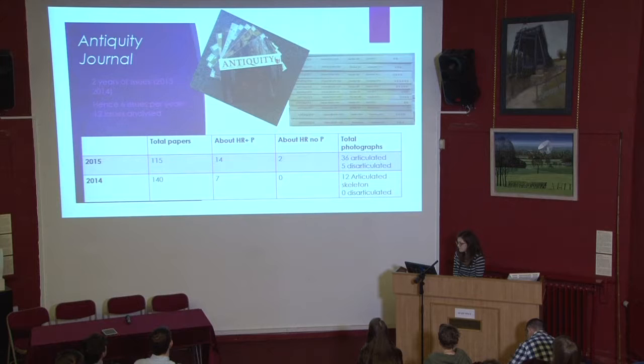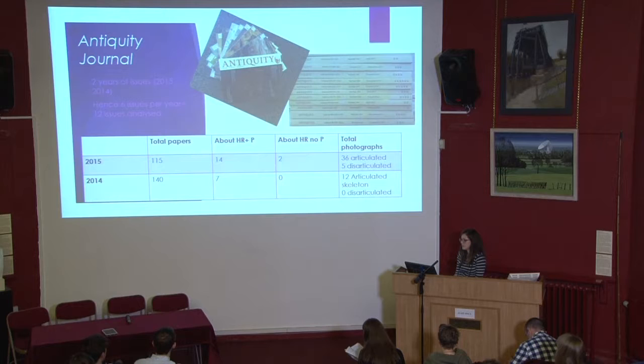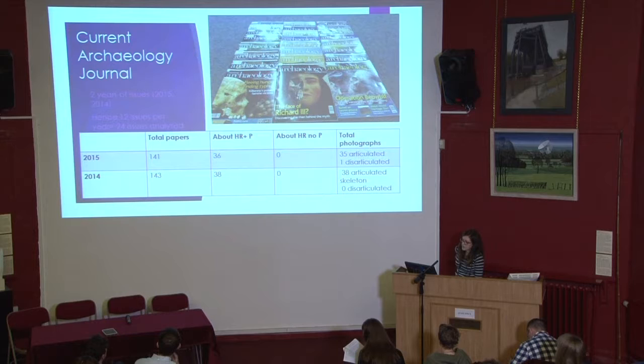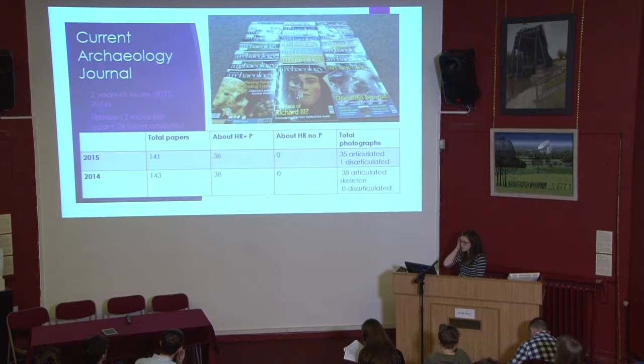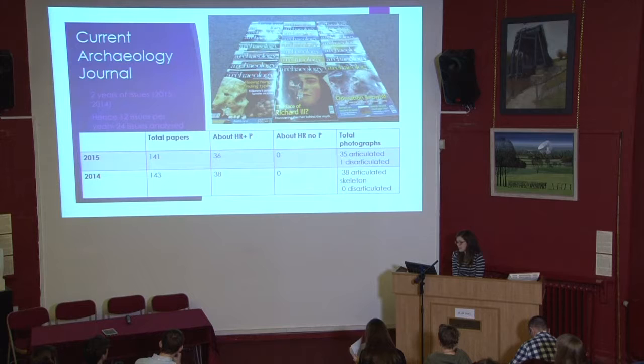In 2014, there were 140 papers in total, seven about human remains with pictures, none about human remains with no pictures, and again they were all articulated skeletons. For Current Archaeology Journal, two years of issues analyzed, the total photographs were almost all about articulated bodies. In 2015, just one was about disarticulated remains, and in 2014 there were 38 pictures of articulated skeletons and no disarticulated ones.